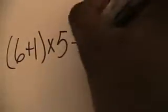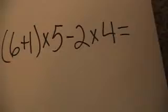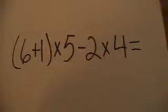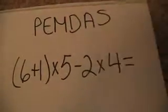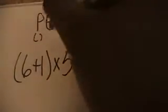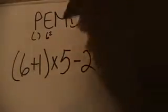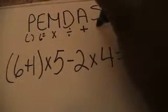Alright, example two. Write it as I write it down: parentheses six plus one, times five, minus two times four. Remember it is good practice to write PEMDAS over the problem, because PEMDAS represents the order in which we work mathematical problems. P stands for parentheses, E stands for exponent, M stands for multiply, D stands for divide, A stands for add, S stands for subtract.